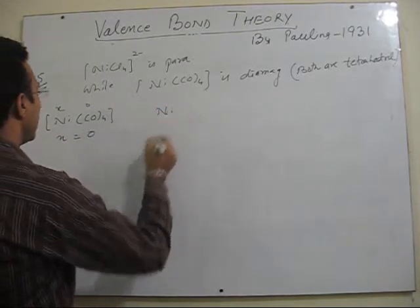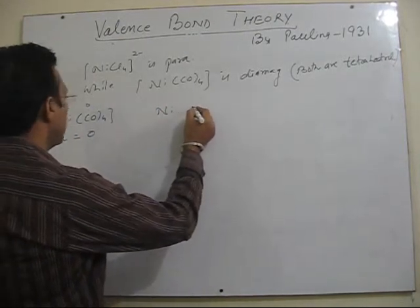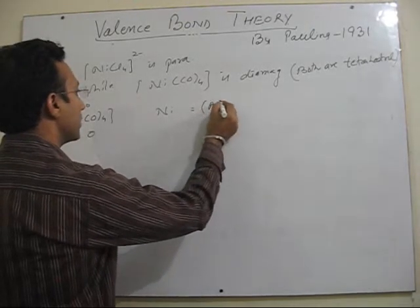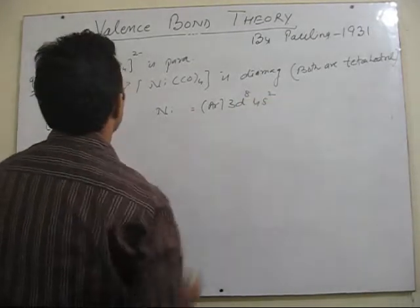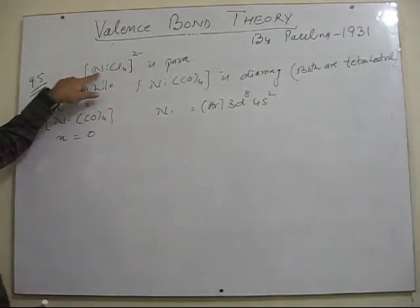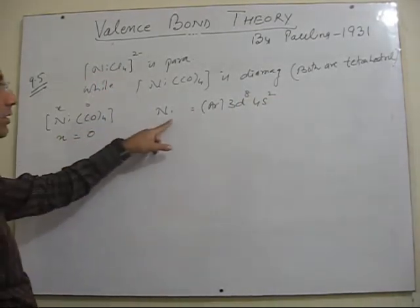Now in this particular complex, if you calculate oxidation state of nickel it comes to be zero. So that means nickel is combining with four carbon monoxide in its ground state, that is in its atomic state. This is a special thing about this. But here nickel was in plus two oxidation state. Here its oxidation state is different.